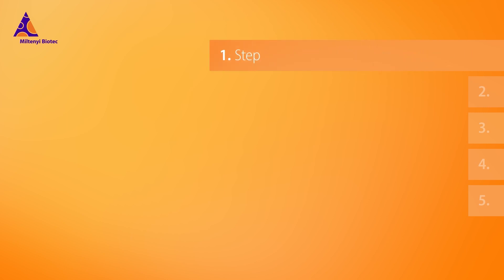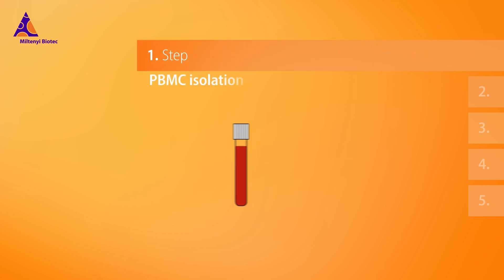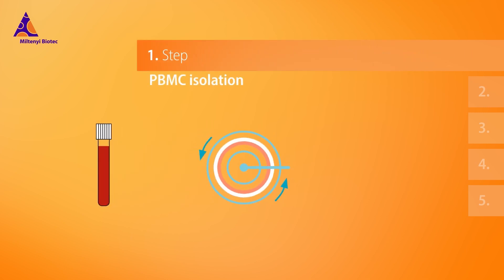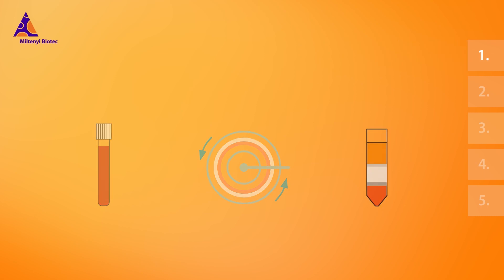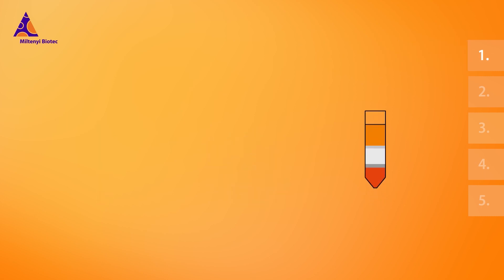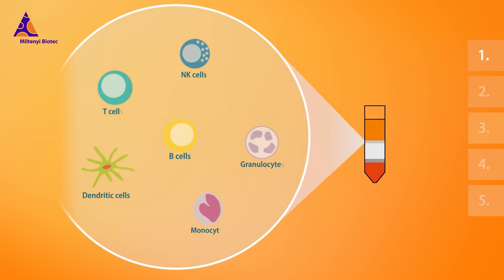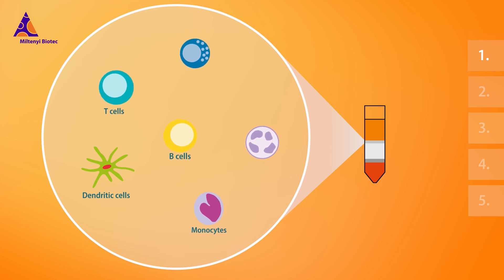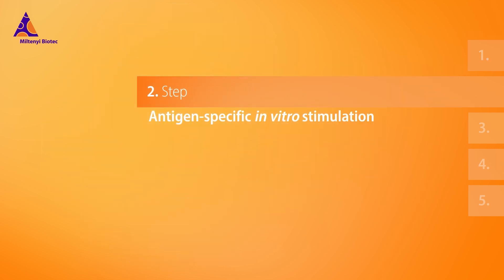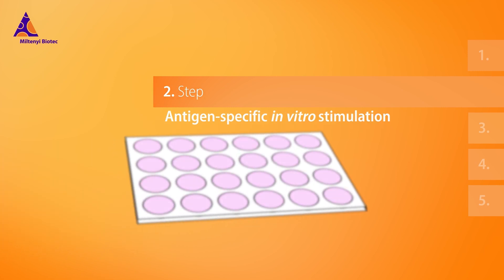Start with isolation of human PBMCs. They contain T-cells and antigen-presenting cells, which are needed for antigen-specific in vitro stimulation.